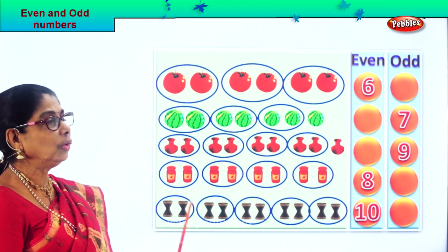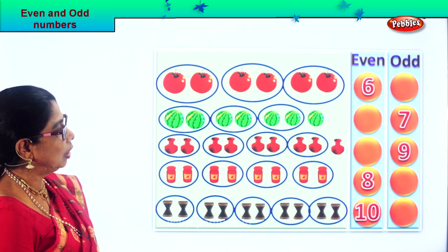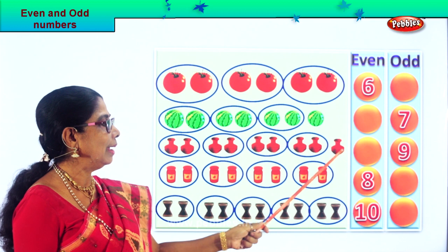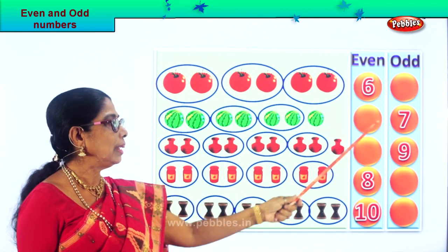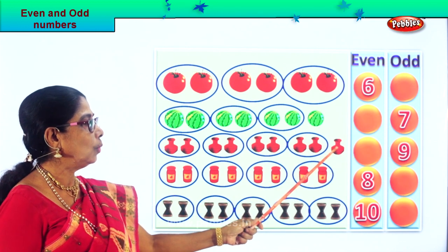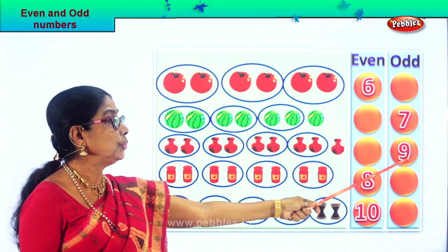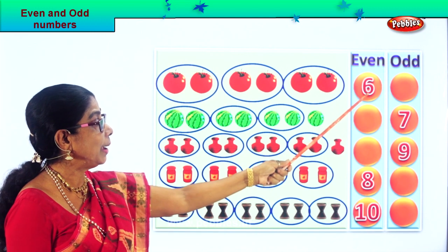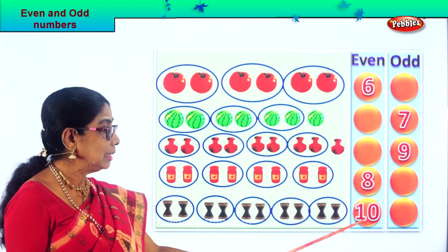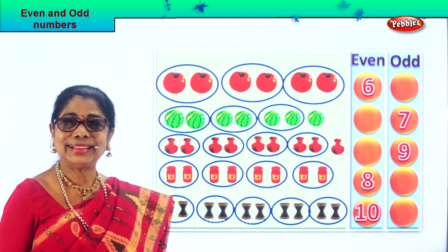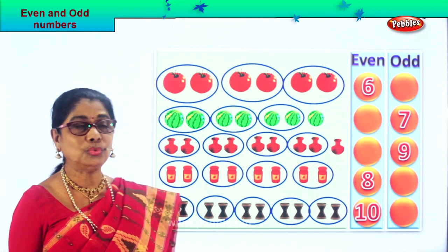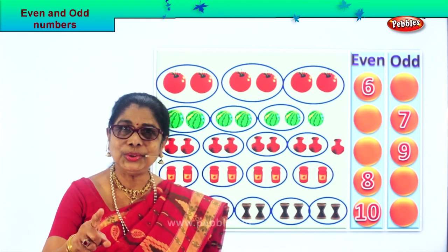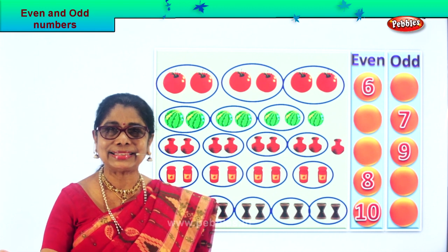Now look at the picture. How many odd numbers do we have? Seven and nine — one watermelon left, so seven; one pot left, so nine. We have two odd numbers. For even: we have six tomatoes, eight jam bottles, ten stools. Now you know how to identify, count in twos, and write down whether they are even or odd numbers. Did you enjoy the exercise? Let's take another exercise.